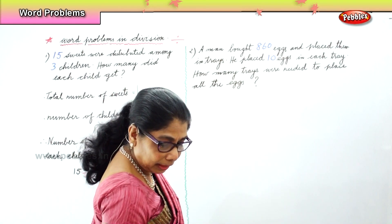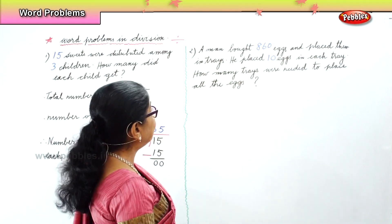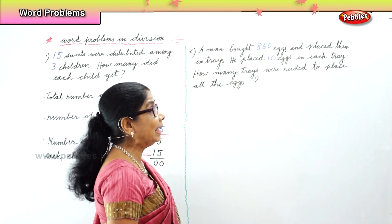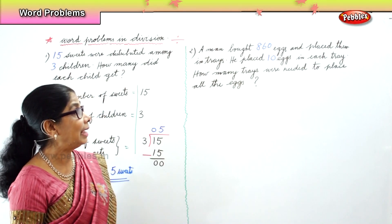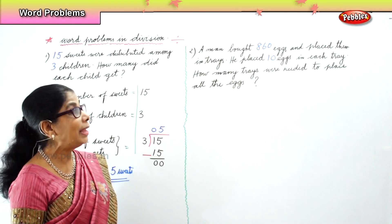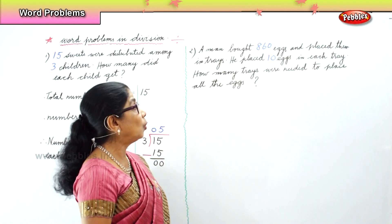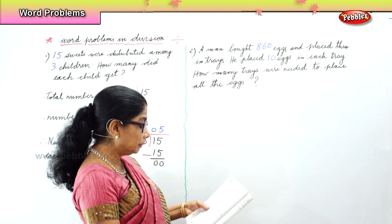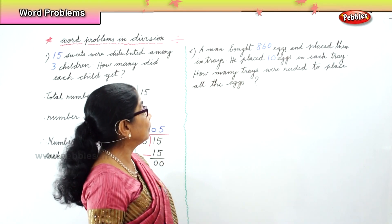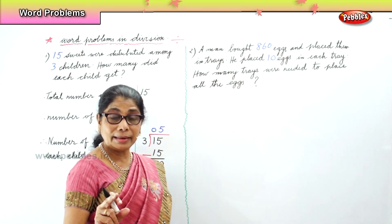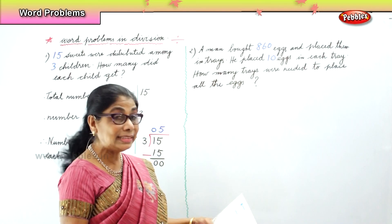Now we go to the next sum. Let's read the problem: a man bought 860 eggs and placed them in trays. He placed 10 eggs in each tray. How many trays were needed to place all the 860 eggs? So what will be the statement? Total number of eggs is 860. Number of eggs in one tray is 10. Therefore, number of trays needed.